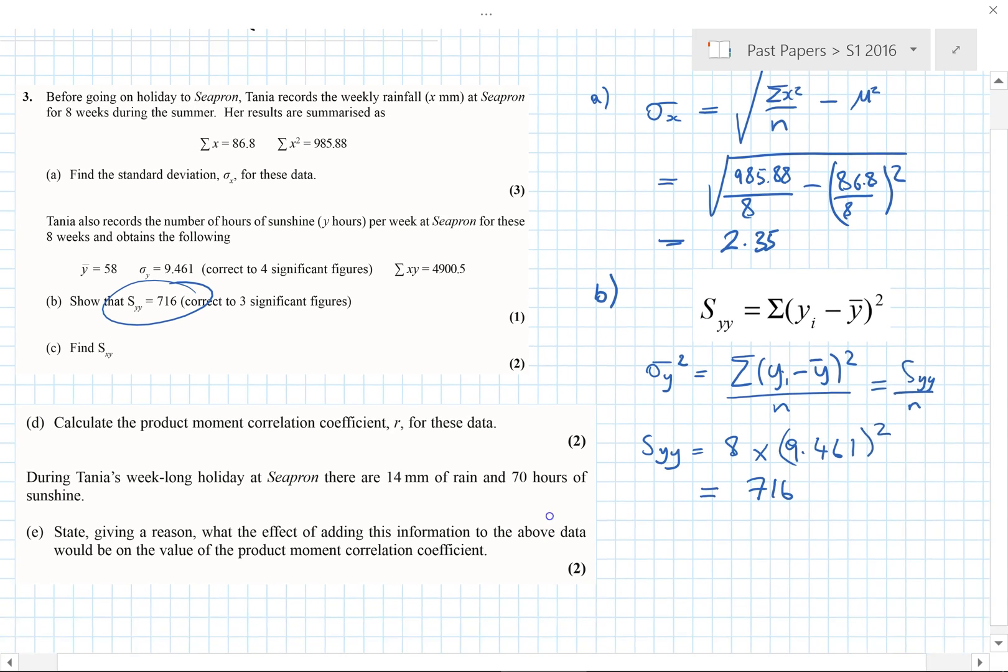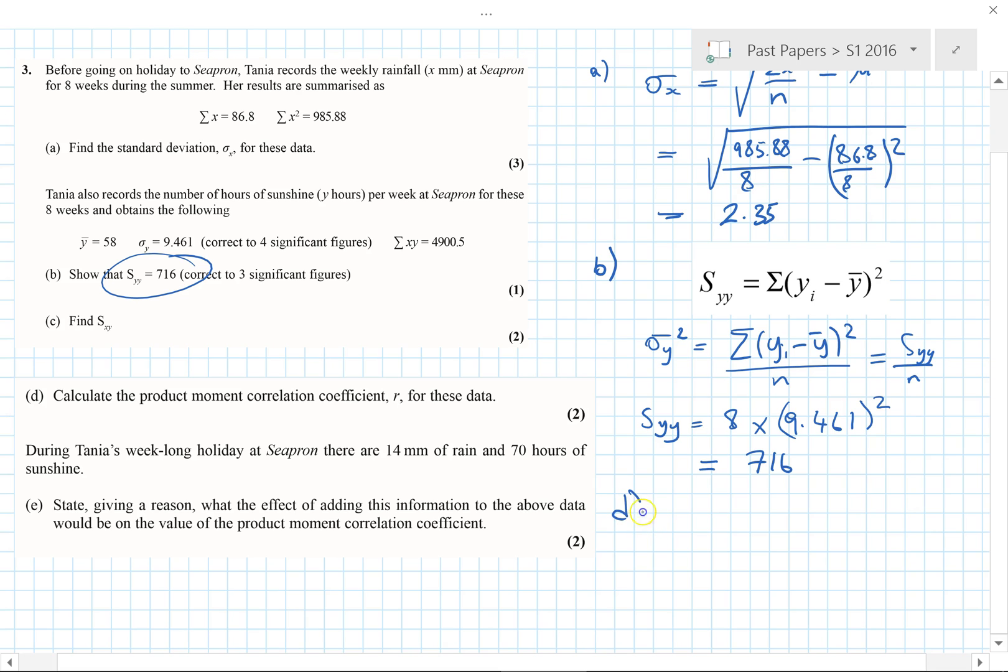And then we talk about the product moment correlation coefficient. This is given in the formula book as well. We need to look at part C now. The formula for SXY is equal to basically sigma XY, take away sigma X, sigma Y over N.